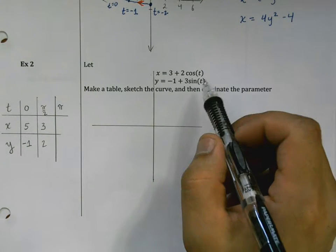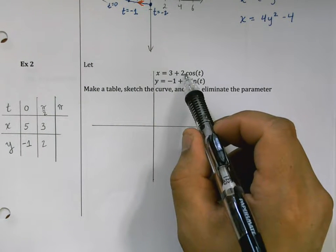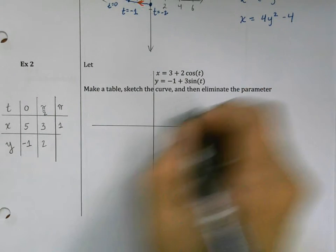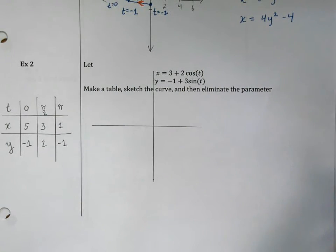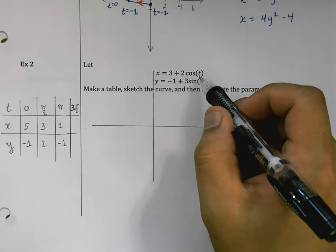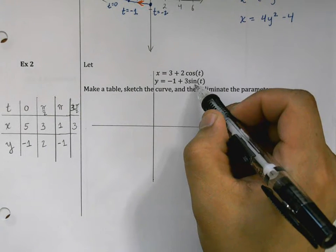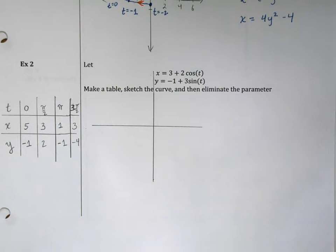When t equals π, cosine of π is negative one times two is negative two plus three is one. Sine of π is just zero, so I get negative one again. And then 3π/2 is going to come next. Cosine of 3π/2 is zero so I get three, sine of 3π/2 is negative one so I get negative four. Now I think I'm ready to start drawing my graph.